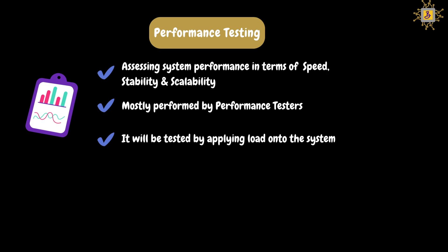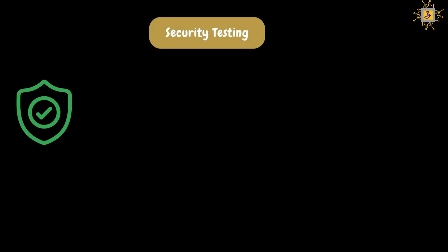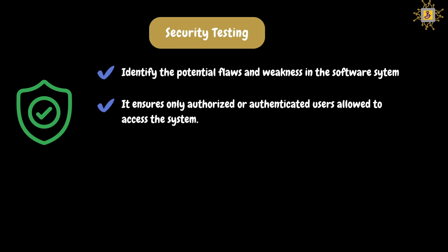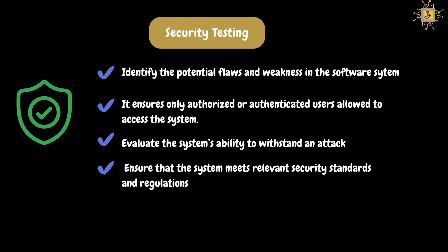Bottleneck is a term that performance testers use for the issues they identify during testing. Now let's discuss security testing. Security testing aims to identify potential flaws and weaknesses of the software system that could lead to a loss of data, revenue, and reputation. It will ensure that only authorized or authenticated users are allowed to access the system, that all personal information stored in the system is secured, and that the system can withstand attacks from malicious hackers. It will also ensure the system meets the company's relevant security standards and regulations. It is very crucial testing and there will not be any compromises with the results.